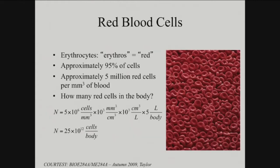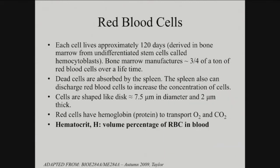Red blood cells are the vast majority of cells in your blood — there are five million cells per cubic millimeter of blood, translating to about 25 trillion red blood cells in your body. Most of these red blood cells come from undifferentiated stem cells. As discussed in the stem cell lecture, they come from a stem cell lineage reviewed extensively from the blood, originating from your bone marrow.